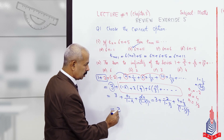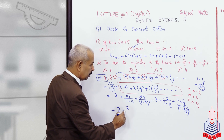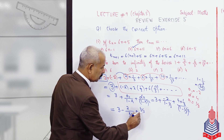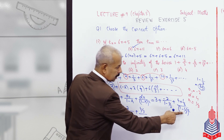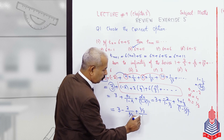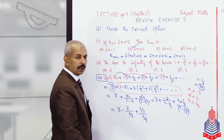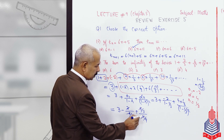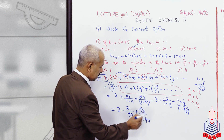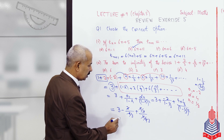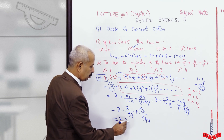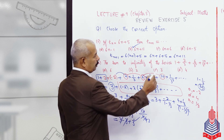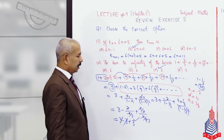This equals 3 plus (minus 2) divided by (2/3) plus (4/3) divided by (2/3)². Simplifying: 2 cancels with 2, 4 cancels with 4, 3 goes to the numerator, giving us 3 minus 3 plus 3. The two 3s cancel, leaving the answer as 3. So Option C is the correct option.